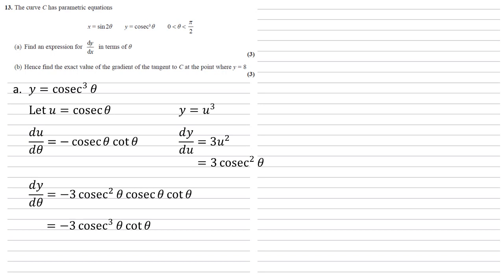Now dx by dθ is a lot easier. It's also the chain rule, but we can see this one quite quickly that it's going to equal 2, so the 2 from the 2θ has come out to the front, cos 2θ.